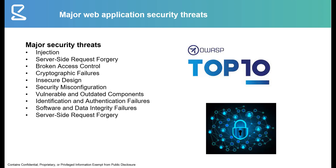Server-side request forgery was also introduced in the new version of OWASP Top 10. It basically allows attackers to send malicious requests to systems via a vulnerable web server. Also, broken access control emphasizes that each user should have specific roles within the system — for example, an administrator has different roles than a normal user — and if this is broken, users could perform unwanted actions with big repercussions.